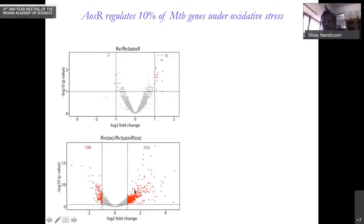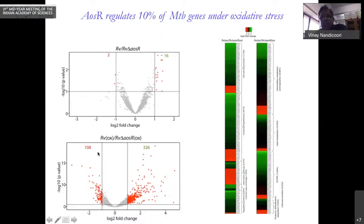However, when we subjected the cells to oxidative stress, we found approximately 326 genes are upregulated in the mutant and 108 are downregulated. This basically meant that the transcription factor has a specific role in oxidative stress. In the absence of the transcription factor, we would have downregulation of multiple genes which are required for survival in oxidative stress.